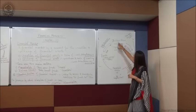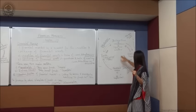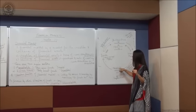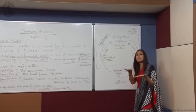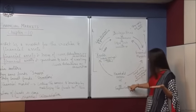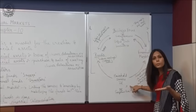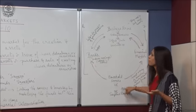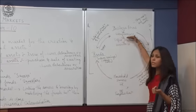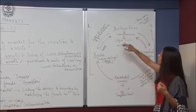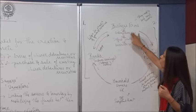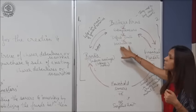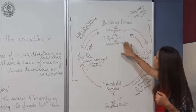We have two main sectors in the economy. First, the household savers — they have surplus money with them, that is why they are called surplus units. The second sector is the business firms, entrepreneurs, or deficit units — the borrowers.